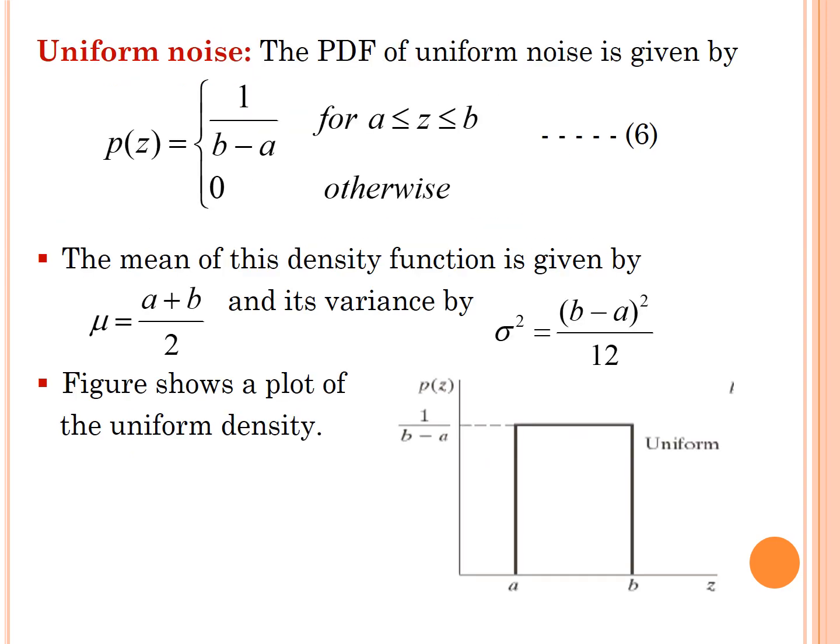Uniform noise. The PDF of uniform noise is given by p(z) = 1/(b-a) for a ≤ z ≤ b, otherwise p(z) is equal to 0. The mean of this density function is given by μ = (a+b)/2 and its variance σ² = (b-a)²/12. Again, here the figure shows a plot of uniform density.